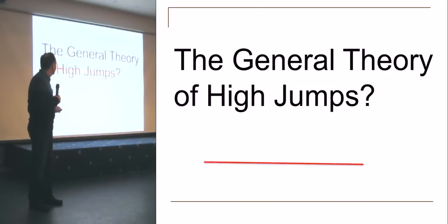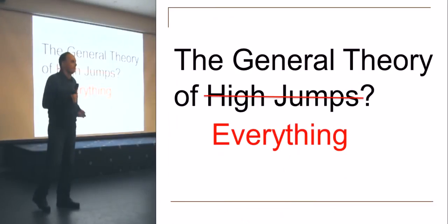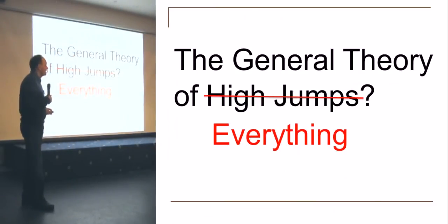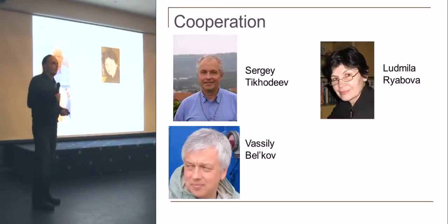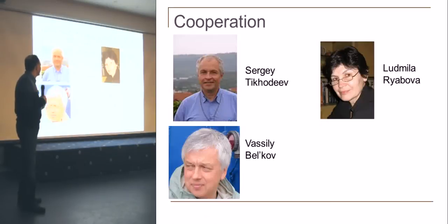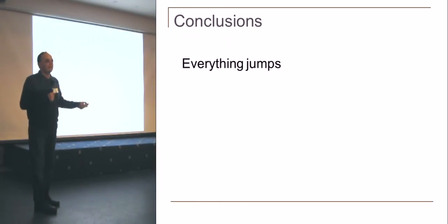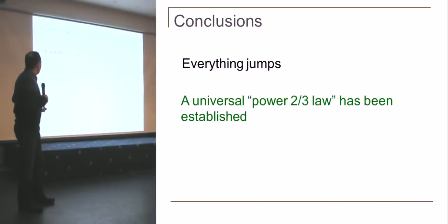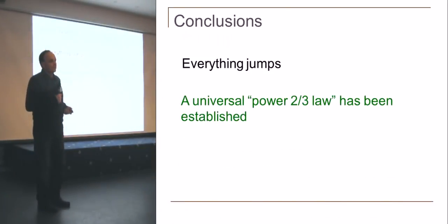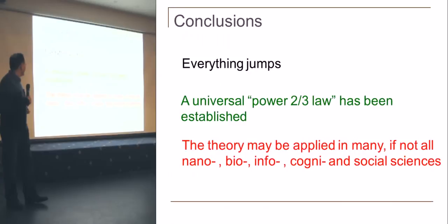Is this the general theory of high jumps? I don't think so. It's a general theory of everything, as you see. At this point, I would like to acknowledge my friends, colleagues, co-authors, and co-drinkers who have suggested some very bright ideas. I'm coming to the conclusions of my talk. First of all, everything jumps. Then, a universal power two-thirds law. And the theory may be applied to many, if not all, nano, bio, info, cogno, and social sciences.